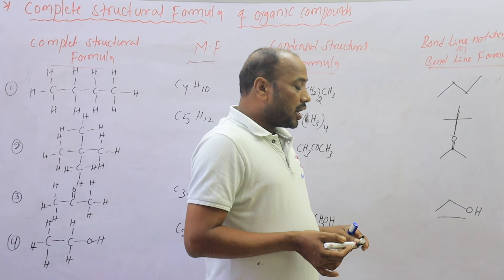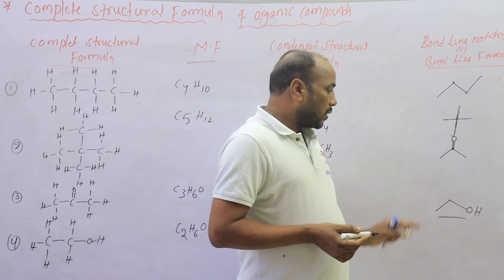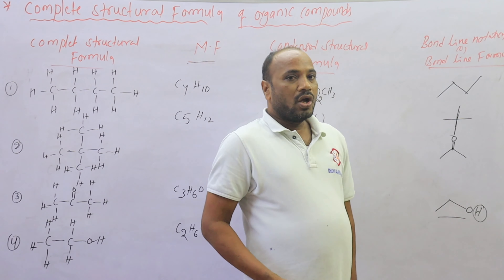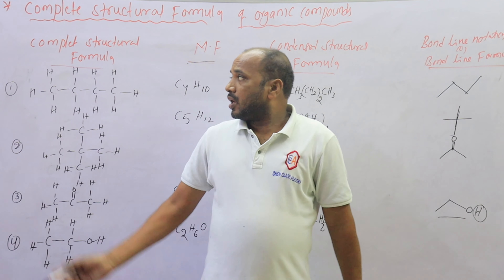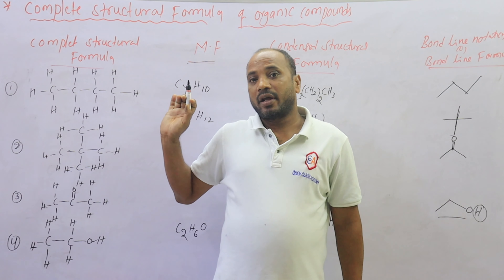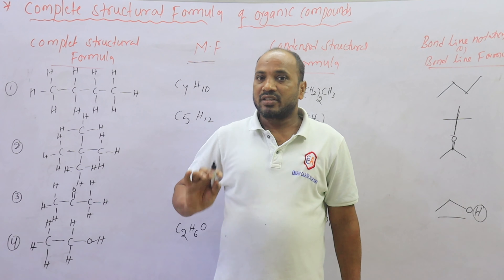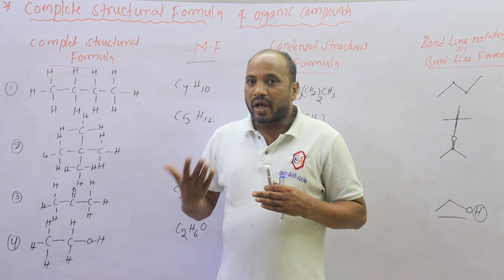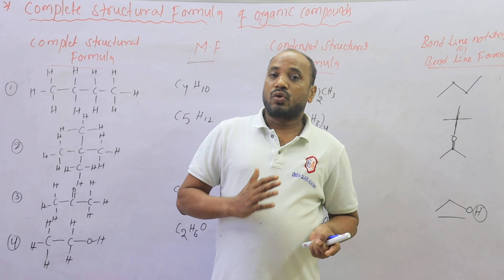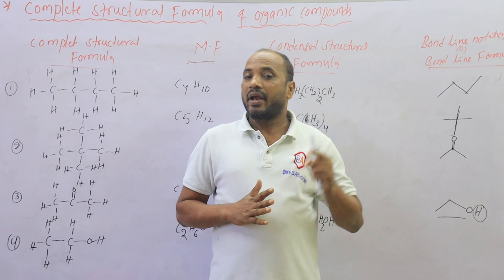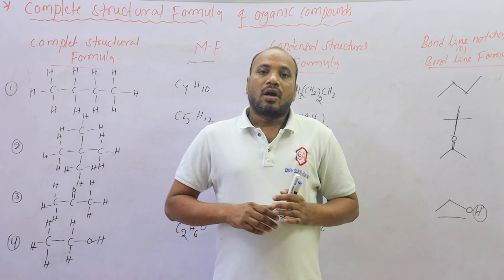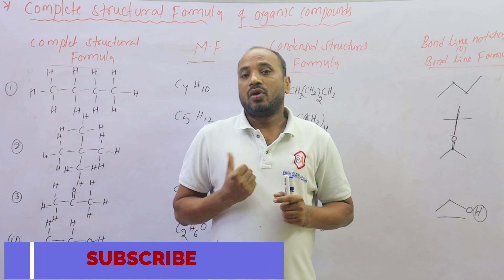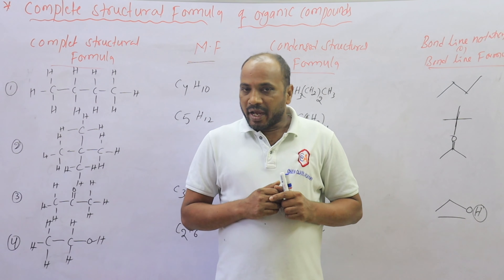In bond line notation, if a hydrogen atom is directly connected to a carbon atom, it is not shown. But if a hydrogen atom is not directly connected to the carbon atom — for example, connected through an oxygen atom — then it is shown. So the complete structural formula can be converted to bond line notation, molecular formula, and condensed structural formula. Please subscribe to my channel Chem Class Academy — you will get new classes every day. Thank you very much.